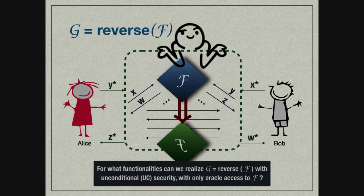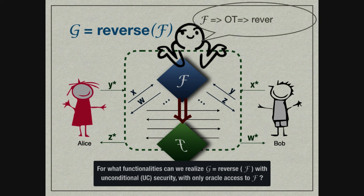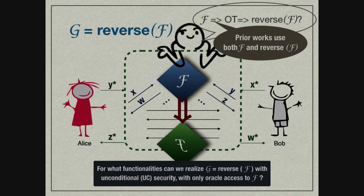There are lots of functionalities that we know already imply OT. We also know OT implies secure computation of any functionality. So if you have OT, you can definitely realize the reverse of F. Doesn't this make the question trivial? Actually, that is not the case. Prior works which show F implies OT need to use both F and reverse of F. Most prior works that realize OT from F make use of F in both directions.